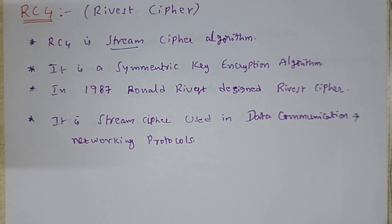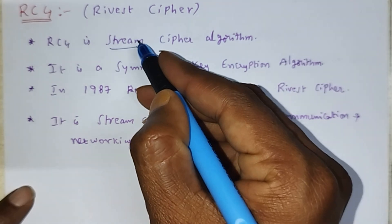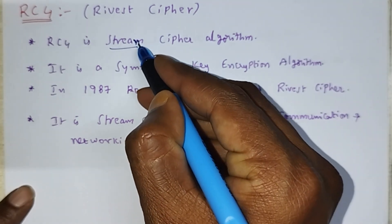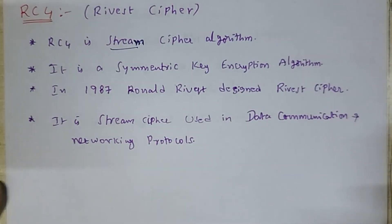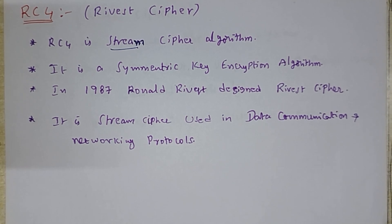Previously, we have seen what is block cipher. In block cipher, the plaintext is divided into a number of blocks. Same here also, in stream cipher, the plaintext is divided into a number of sub-streams.